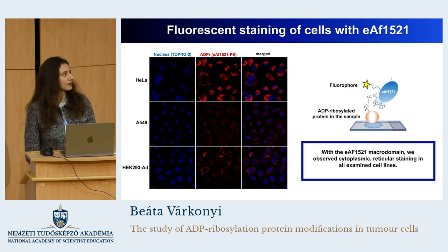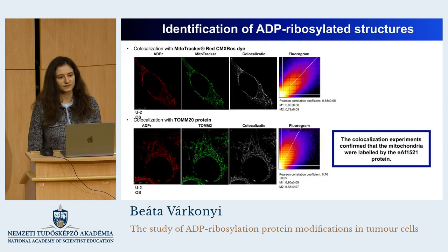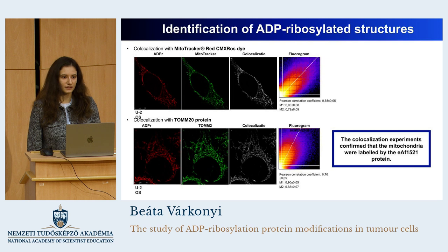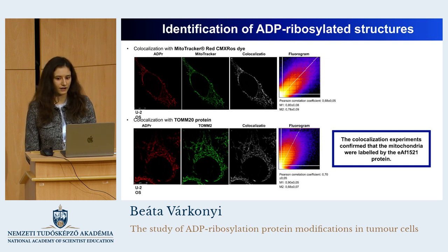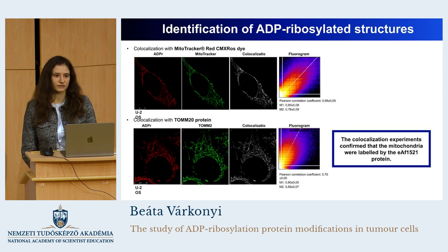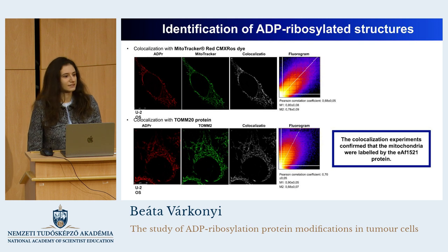This organelle could either be the mitochondria or the endoplasmic reticulum. To find this out, we co-localized with known mitochondrial markers, such as the MitoTracker and the TOM20 protein, and we concluded that the macrodomain did in fact label the mitochondria, and that mitochondrial proteins are the major source of cytoplasmic ADP ribose-related proteins.